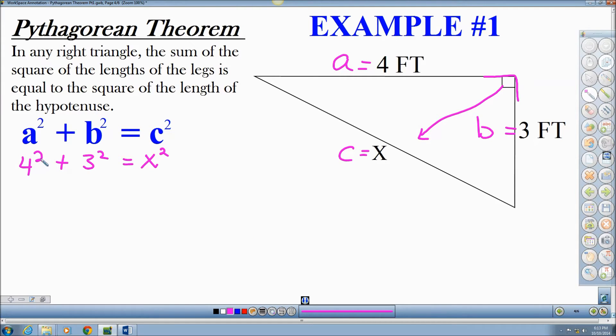So 4 squared, I'm going to solve now. 4 squared makes 16. 3 squared makes 9. And X squared just stays X squared because we don't know how much it is. We're actually going to find out. So now 16 plus 9, that equals 25, which is equal to X squared.